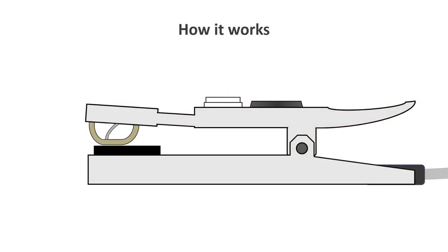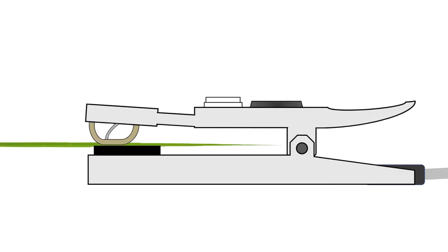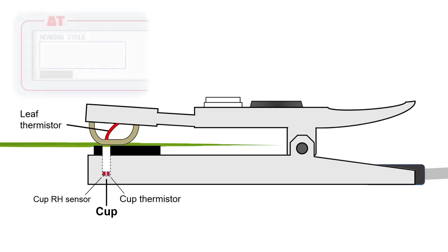Let's take a closer look at the AP4's sensor head. It consists of a gentle spring clip that can be positioned easily onto the leaf, a thermistor for measuring leaf temperature, a small chamber (the cup) that lies directly below the leaf surface, and at the bottom of the cup, a relative humidity sensor and a second thermistor measuring cup temperature.